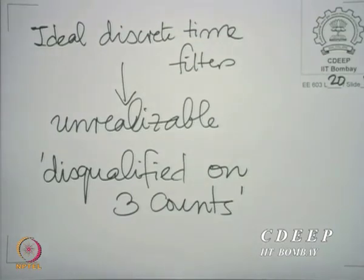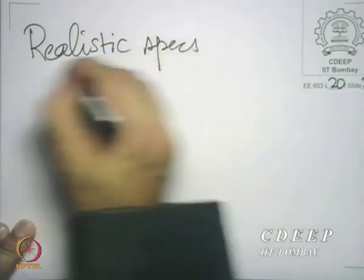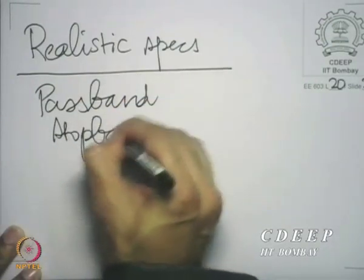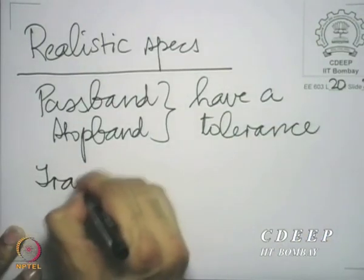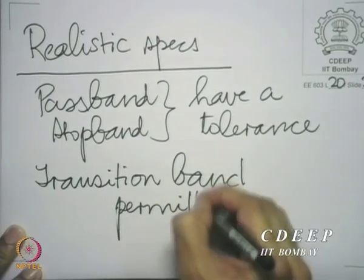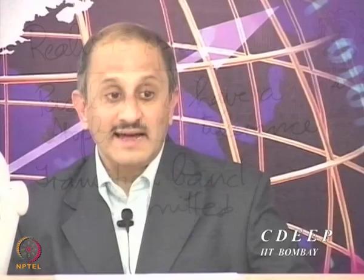We then moved on to putting down a realistic set of specifications. In the realistic set of specifications, the pass band and the stop band have a tolerance, and there is a transition band. These are the two things that need to be taken care of. Given that you have allowed for a non-zero tolerance in the pass band and the stop band, and that you have allowed a transition band, the resultant specifications are always realizable.